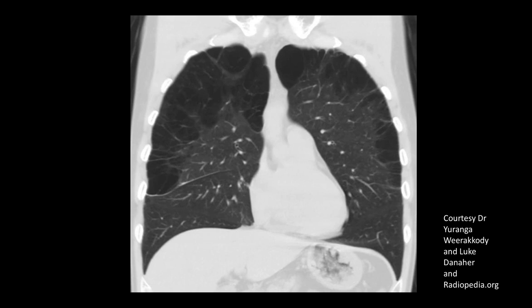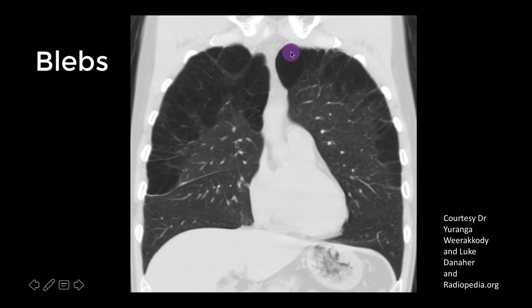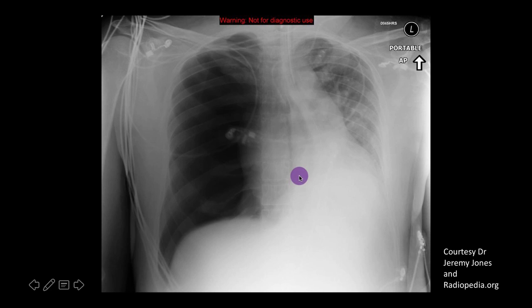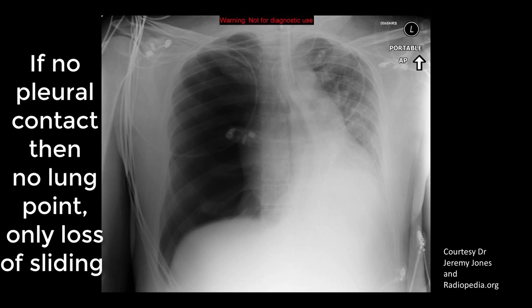The reason a lung point is necessary to diagnose a pneumothorax is because other phenomena can stop the pleura from rubbing against each other, such as emphysema blebs, therapeutic pleurodesis, or pleurodesis from pneumonia. Unfortunately, if there is no place where the two pleura come back into contact — like in a tensioned pneumothorax — there will be no lung point, and so it will not be possible to conclusively diagnose a pneumothorax; all you will see is loss of lung sliding. This is why it is important to integrate the clinical context into your interpretation, just like with auscultation or any diagnostic aid.